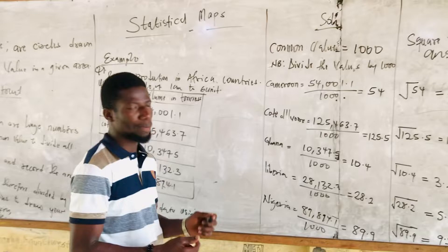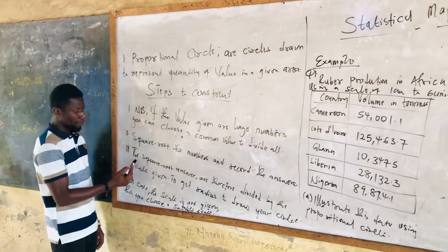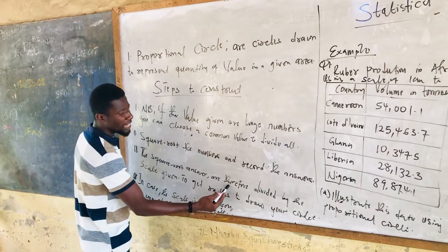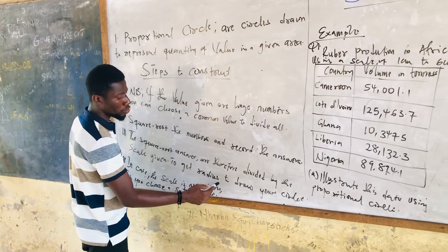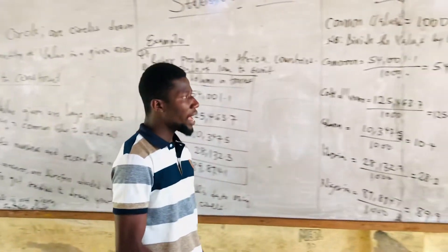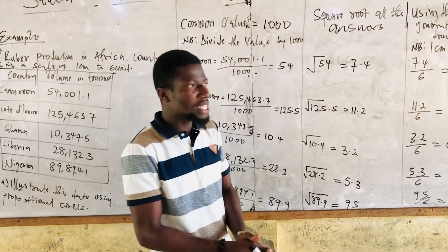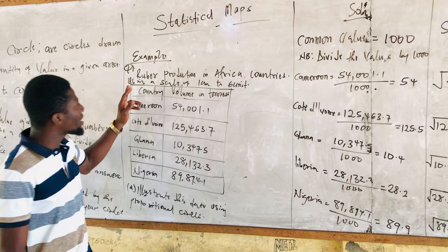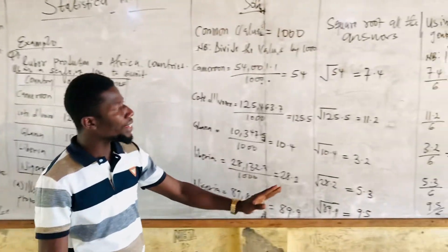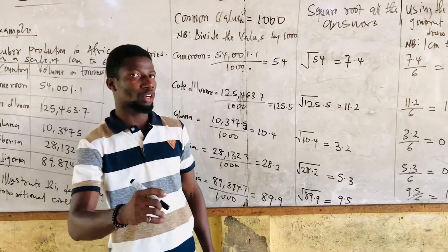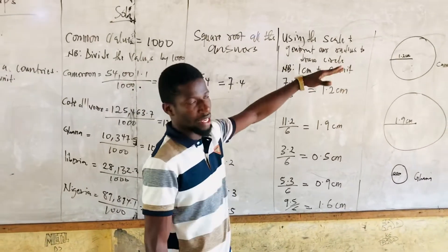Step 3: the square root answers are therefore divided by the scale given to get the radius to draw your circle. Per our step, we have to divide all the answers by the scale given. What was the scale given? Per the question, we have a scale using 1 centimeter to 6 units. We have to divide all of this by 6 to get our radius to draw the circle. I titled it: using the scale to generate your radius to draw your circle.